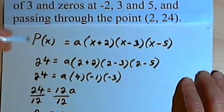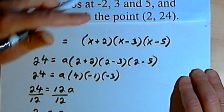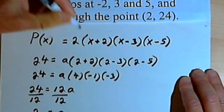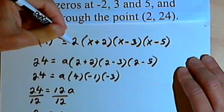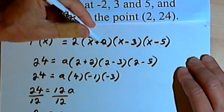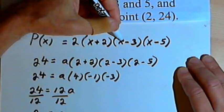So now I can erase this a that I've put in here and just put in a 2. And my polynomial is going to be P(x) equals 2 times (x plus 2) times (x minus 3) times (x minus 5).